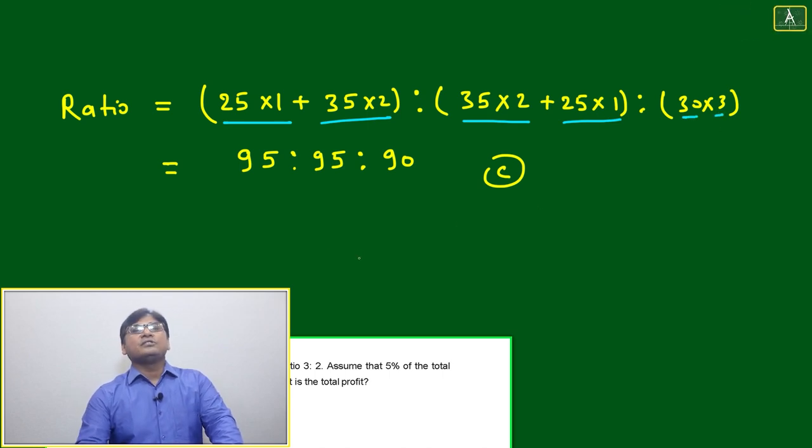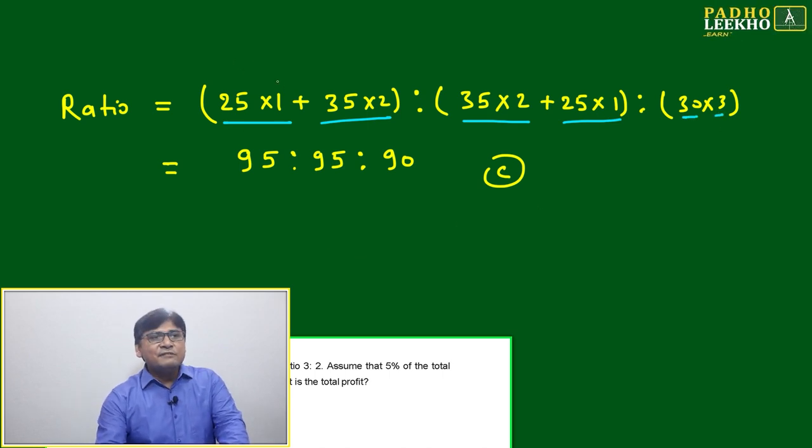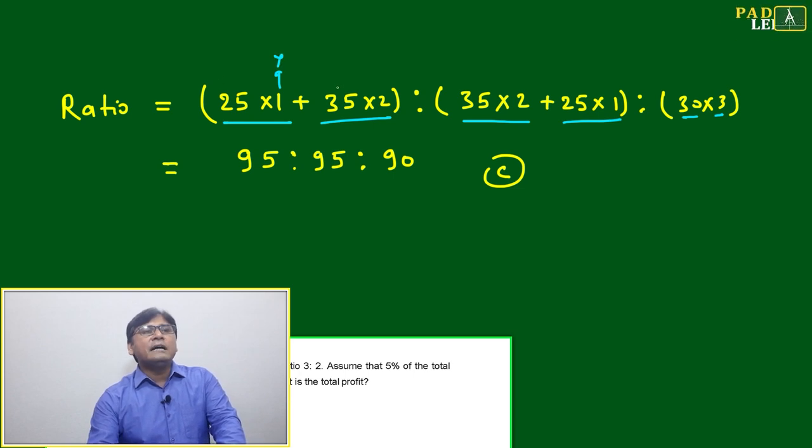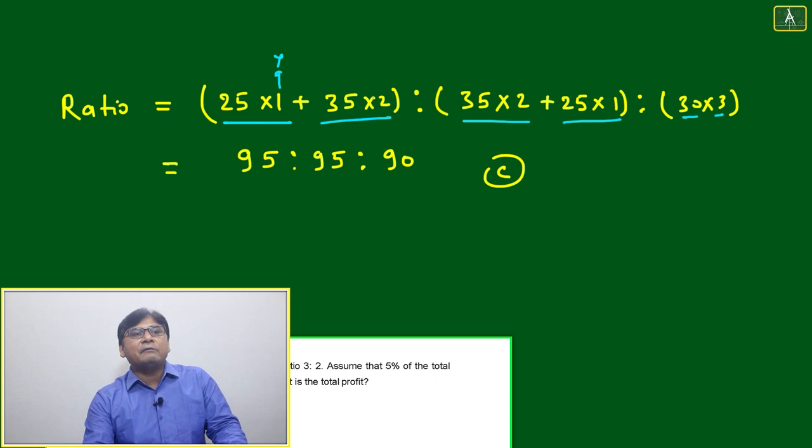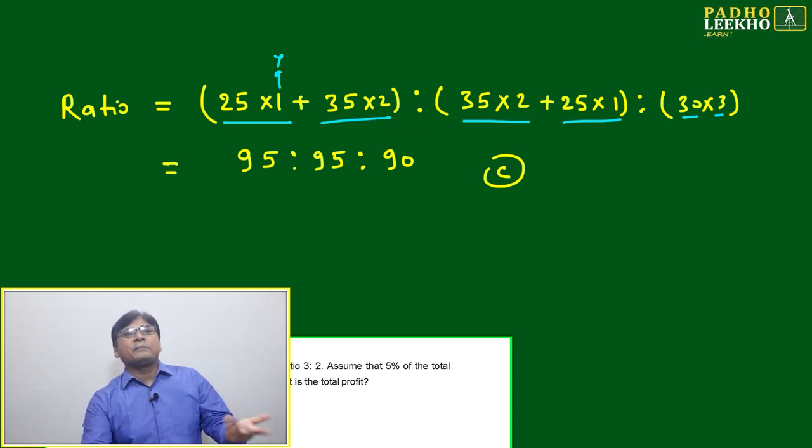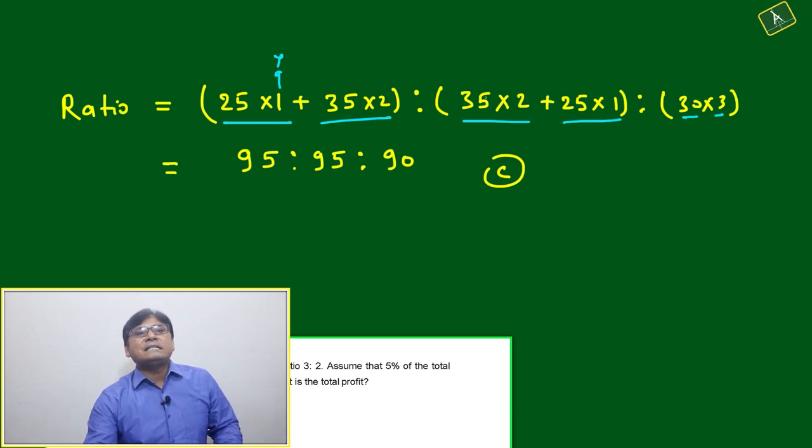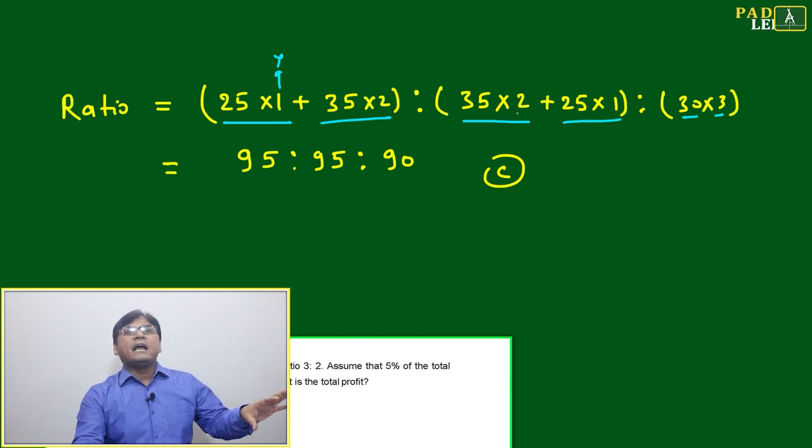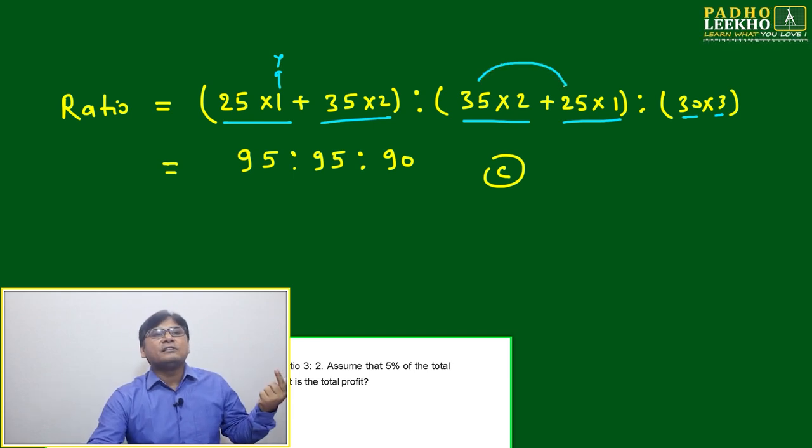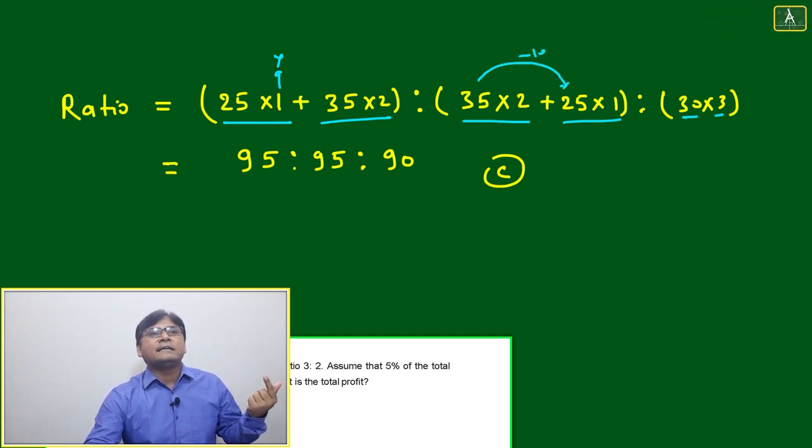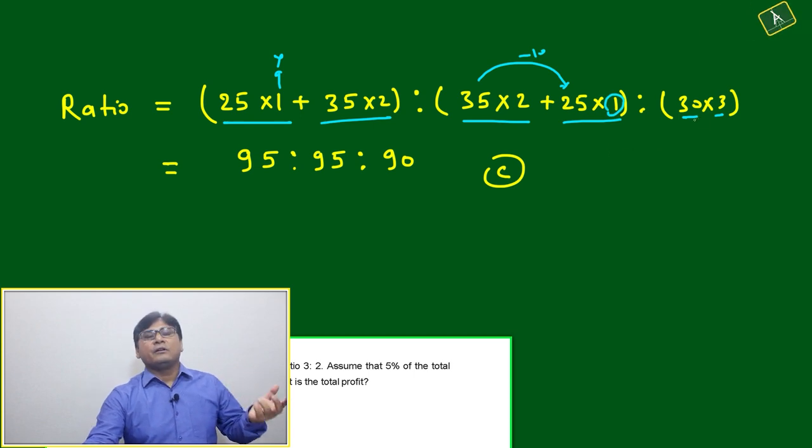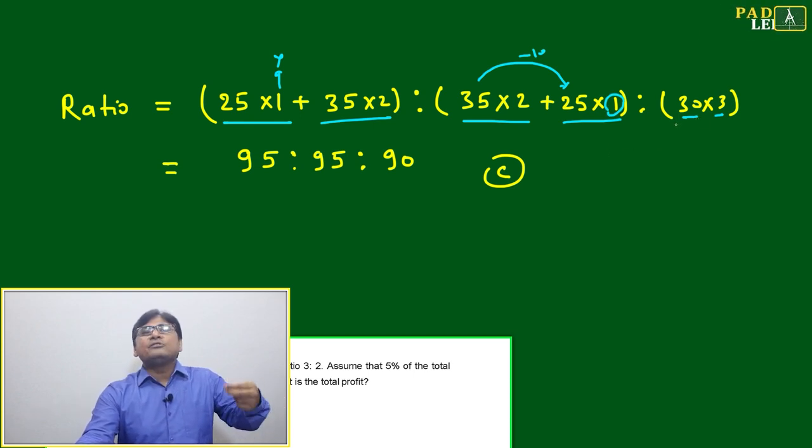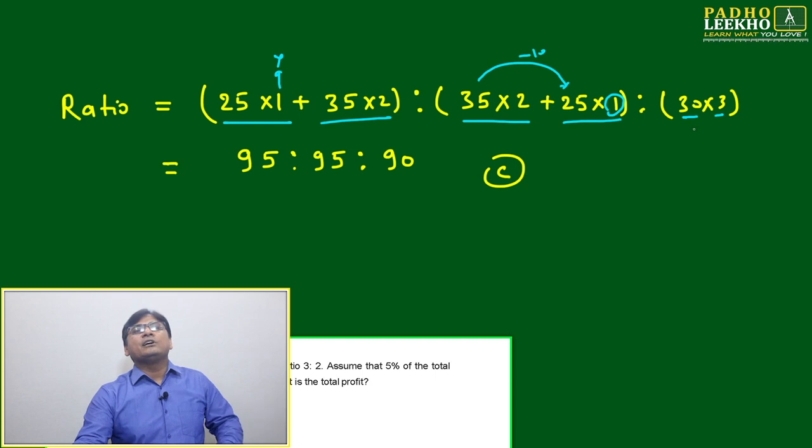Breaking it down: Priyam kept 25 lakh for one year, then after one year he invested 10 lakh further, making it 35 lakh for the next two years. Total time period is three years. Kureshi put 35 lakh initially, and after two years withdrew 10 lakh, so 35 minus 10 equals 25, which continues for one year. Rameesh put 30 lakhs initially and it continues for the next three years.